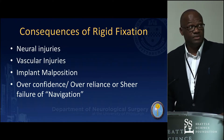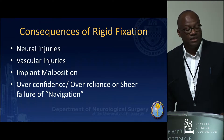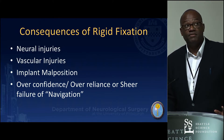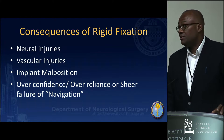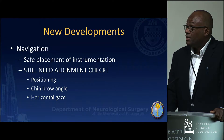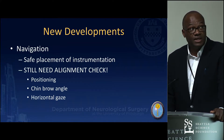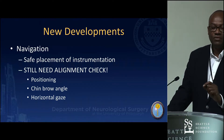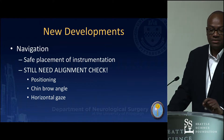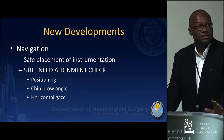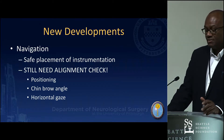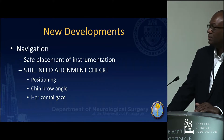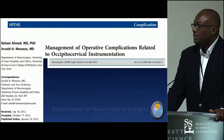Consequences of rigid fixation include neural injuries from penetrating fixation devices, vascular injuries, and overconfidence in navigation in this mobile, not yet fully understood region. There are new developments involving navigation, but it doesn't remove the need for fastidious alignment checks — ensuring the chin-brow angle and horizontal gaze are preserved, and correct patient positioning to avoid coronal imbalance. There's no good osteotomy to correct coronal imbalance from prior surgery.